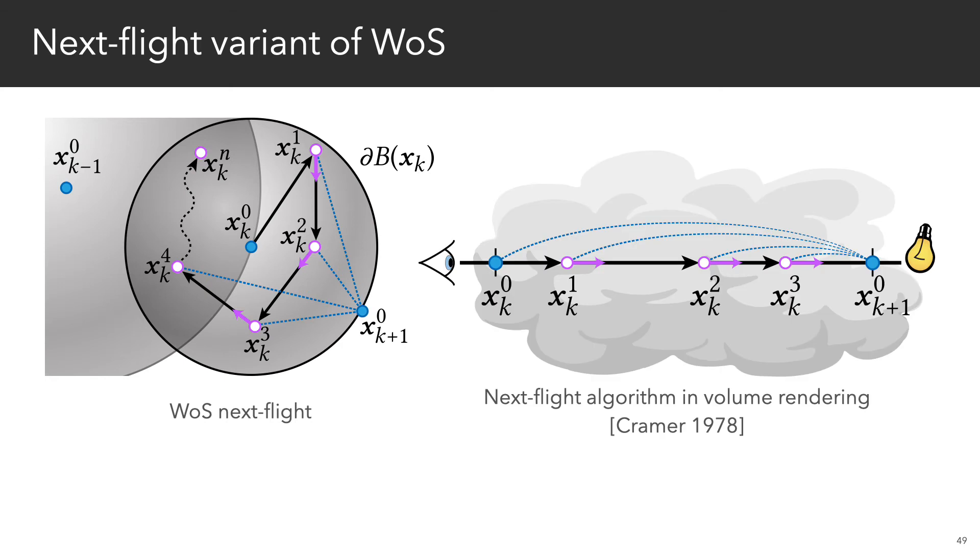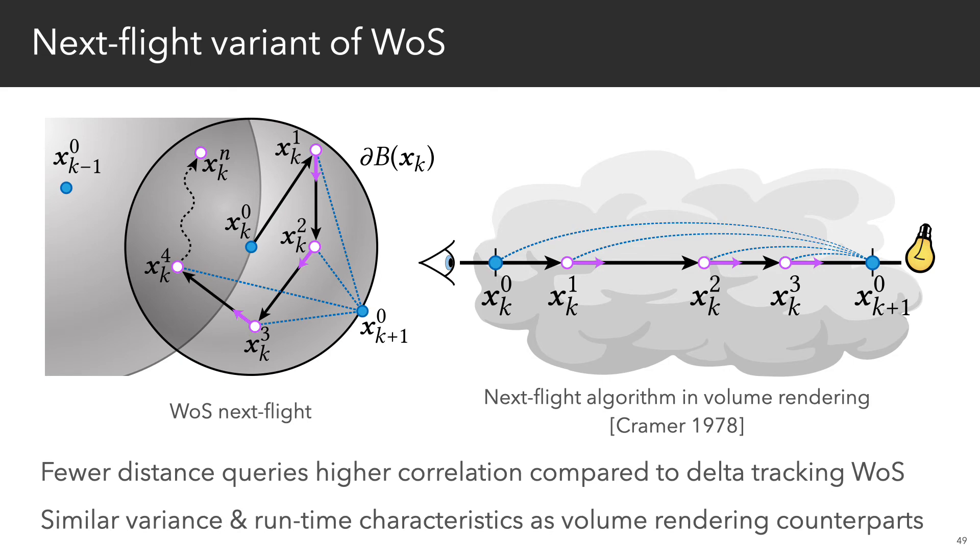In practice, we find that while the next flight version often requires fewer distance queries compared to delta tracking, it usually suffers from higher correlation. Both algorithms also share the variance and runtime performance characteristics of their volume rendering counterparts.